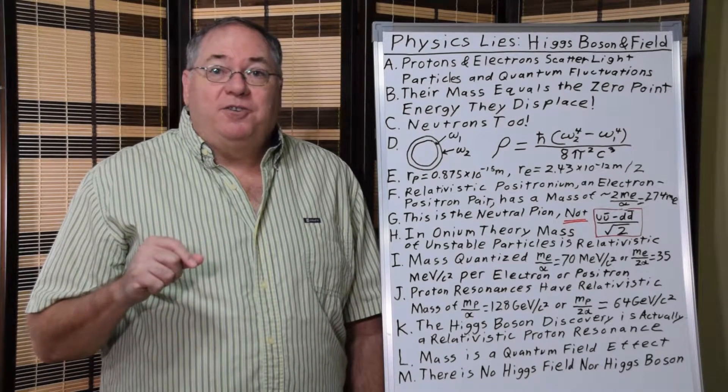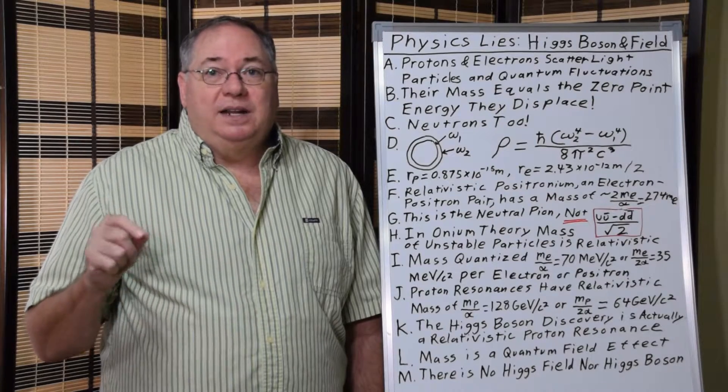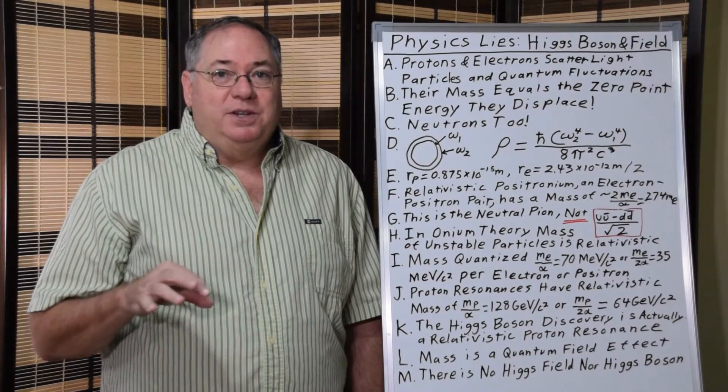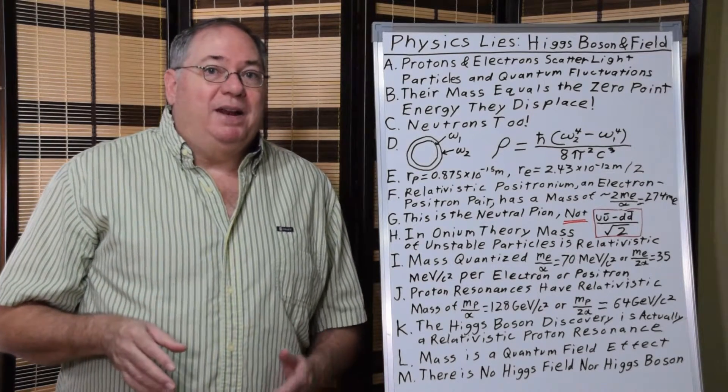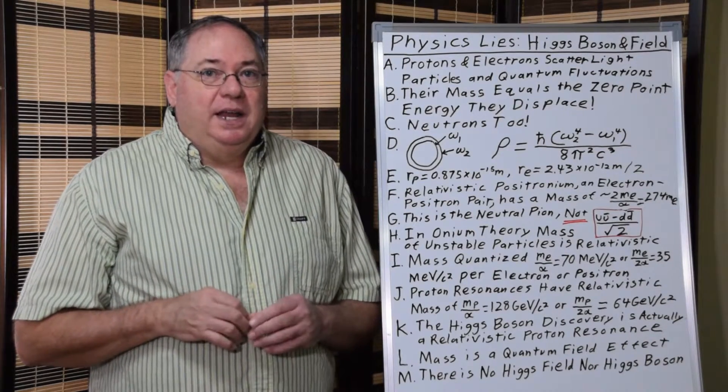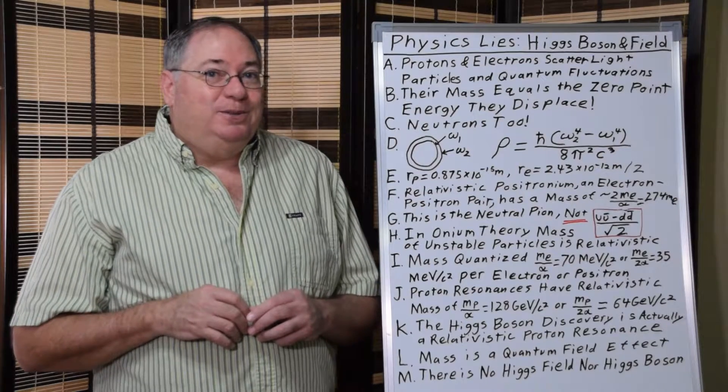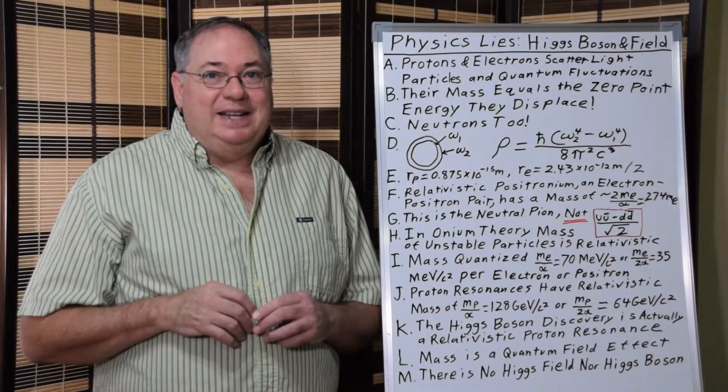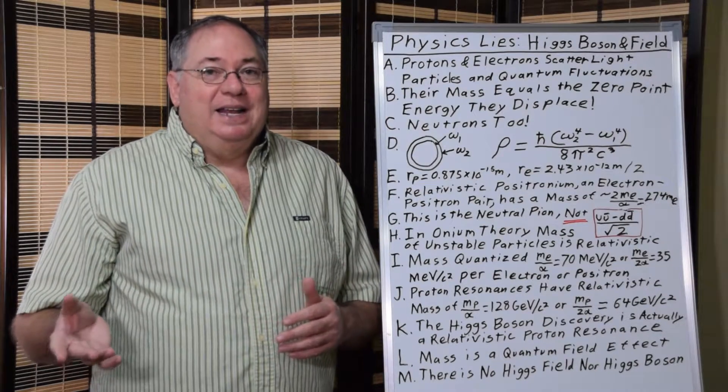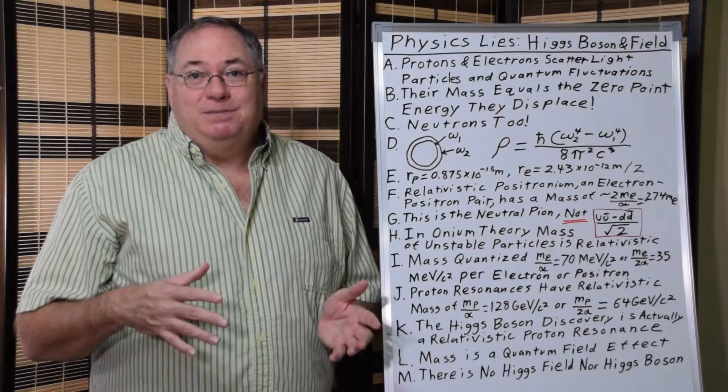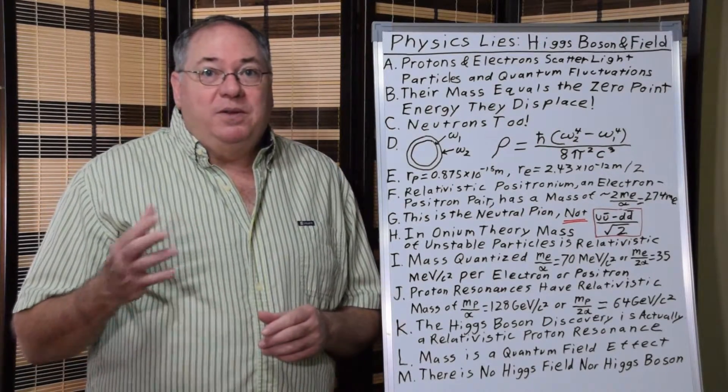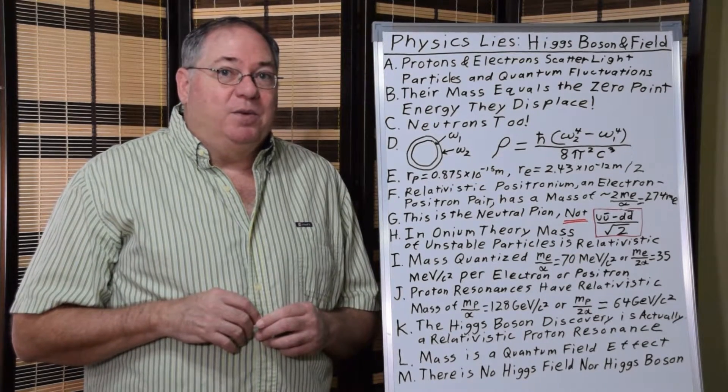Now this brings up the interesting point that because the proton, electron, and neutron displace the amount of quantum field energy equivalent to their mass, that the total amount of energy in space doesn't change when you include the mass energy. So a theory, say for example, Einstein's general relativity, that looks for changes in energy gradient to explain gravity is a false assumption, because particles don't change the energy gradient, not when you include the zero-point energy of the quantum field.